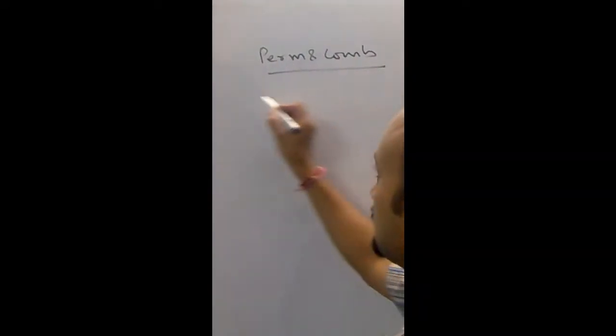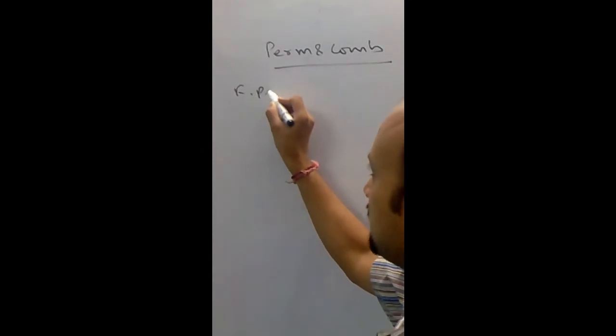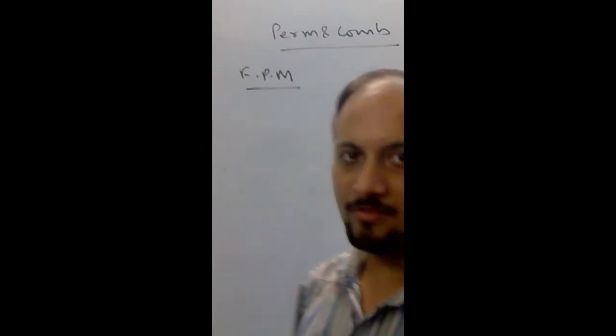There are two basic principles in this chapter. One is fundamental principle of multiplication. The other is fundamental principle of addition. Let's talk of each one by one. Fundamental principle of multiplication says, if one job can be done in M ways, another can be done in N ways, then both together or one after the other can be done in M into N ways. Mind it, I said both together or one after the other in M into N ways.